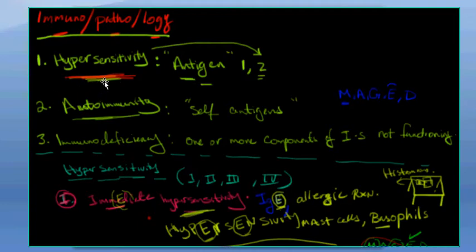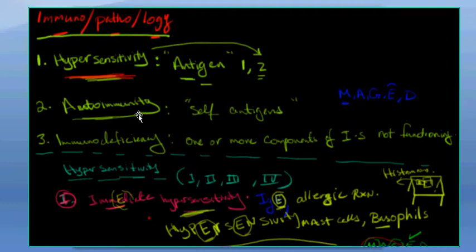Hypersensitivity is when our own body becomes sensitive against allergens. You get attacked once with the antigen, and the second time your body already recognizes it and becomes really sensitive. Autoimmunity is when your body's self-antigens are being attacked — you attack yourself because your immune system has a problem. Immunodeficiency is when one or more components of our immune system is not functioning right.